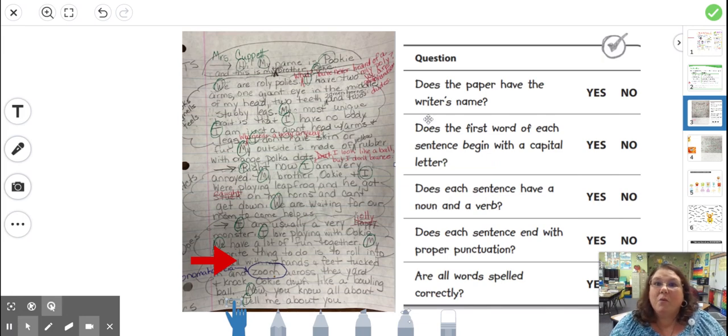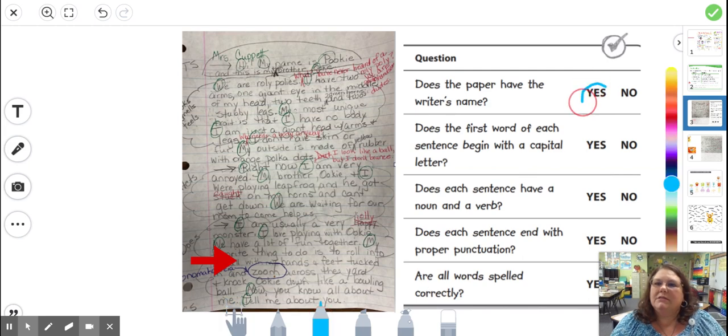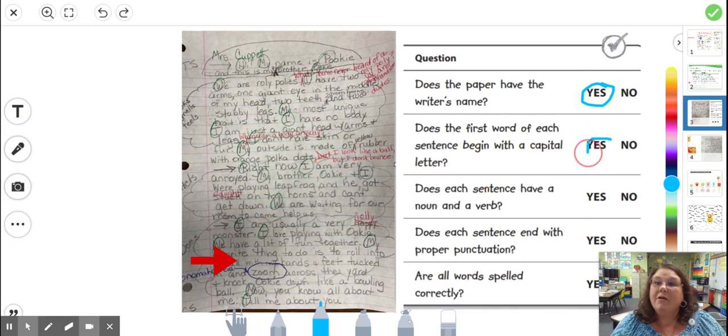Let's check off what we've done. Does the paper have a writer's name? Yes, it does now. Does the first word of each sentence begin with a capital letter? It does now. Does each sentence have a noun and a verb?